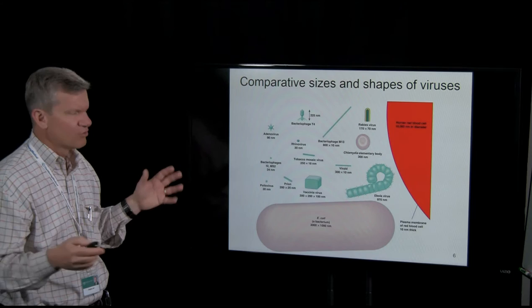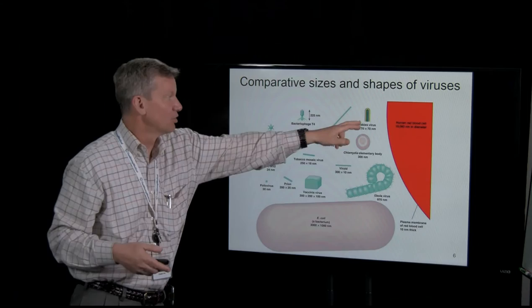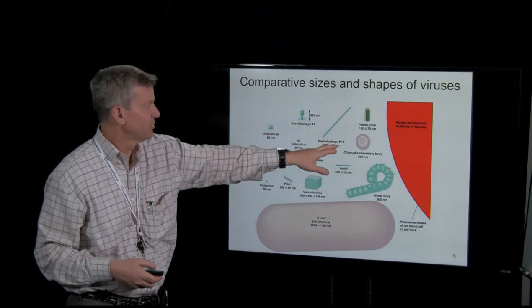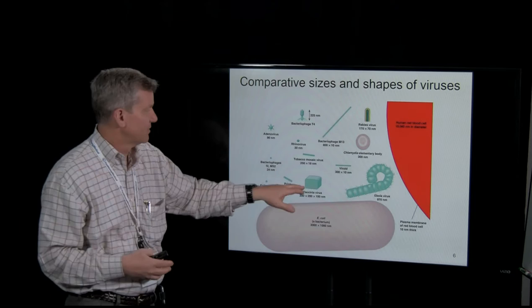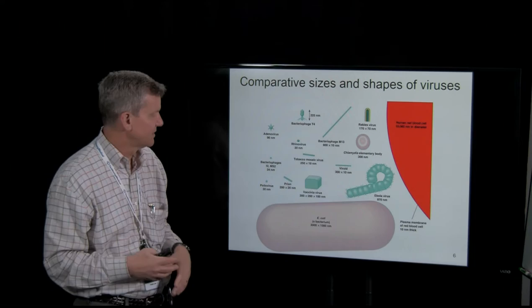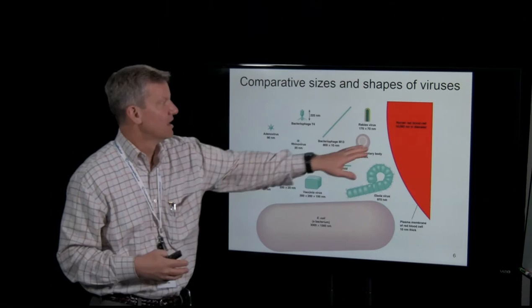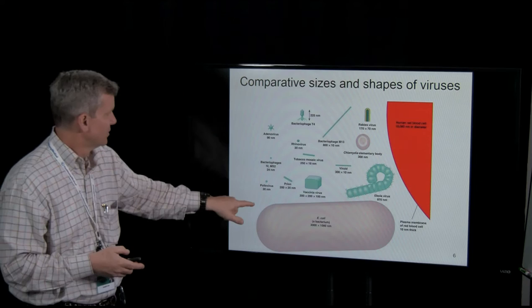Now we'll talk a little about virus structure. I'll move quickly through these slides because it's easy to appreciate the different shapes and sizes. Some look like a lunar lander, some look like a bullet shape like rabies virus, and some are filamentous. There's a filamentous bacteriophage called M13 that looks similar to filovirus — the Ebola-type virus. Vaccinia virus is one of the largest viruses. Here's E. coli — you can probably fit about 20 vaccinia viruses inside an E. coli, even though vaccinia does not infect E. coli. Here's a red blood cell, which gives you an idea of how small viruses are relative to our cells.